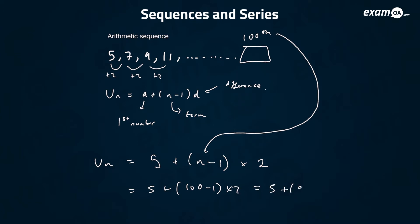That gives us five plus ninety-nine times two. You can use a calculator or mental maths to work out what that would be.